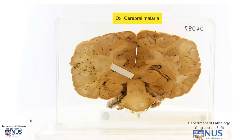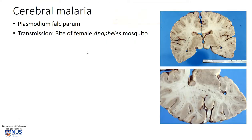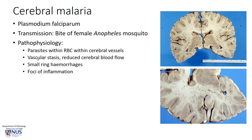The diagnosis here is cerebral malaria. Cerebral malaria is caused by the parasite Plasmodium falciparum, and this is transmitted by the female Anopheles mosquito. What happens is that the parasites actually enter the red blood cells, and within the very small vessels in the brain, they can give rise to vascular stasis.